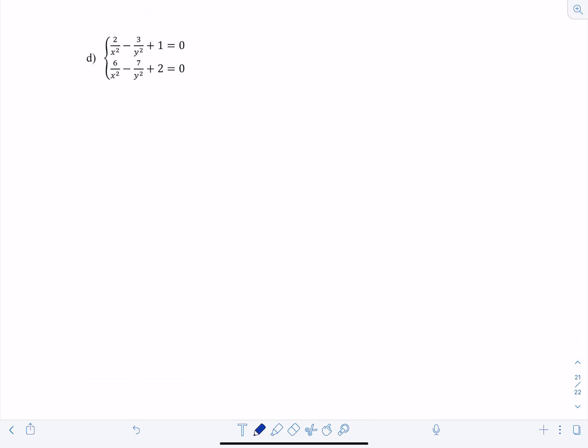2 over x squared minus 3 over y squared plus 1 is 0. And then 6 over x squared minus 7 over y squared plus 2 equals 0. So a few different ways you can go about doing this one. We could try using elimination again. How about we multiply this top equation by negative 3. So then it's going to become negative 6 over x squared plus 9 over y squared minus 3 equals 0.